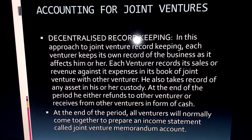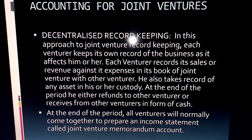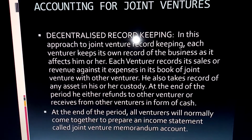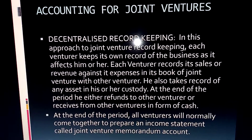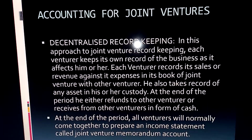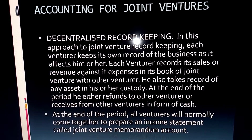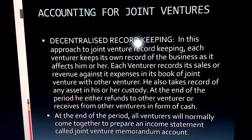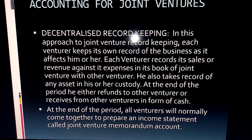Now, accounting for joint ventures. In the decentralized approach, record keeping gives independence to the venturers — each keeps their separate records. Incomes traceable to your name are recorded by you, and expenses traceable to your name are recorded by you. Your co-venturer does the same. So if you and your friend are in a joint venture, you keep your records and she keeps her own records. That is what we call decentralized record keeping.